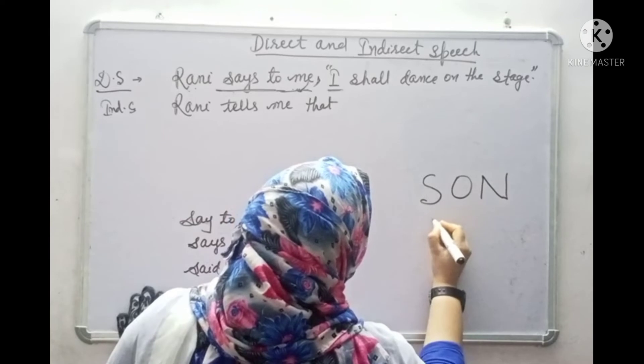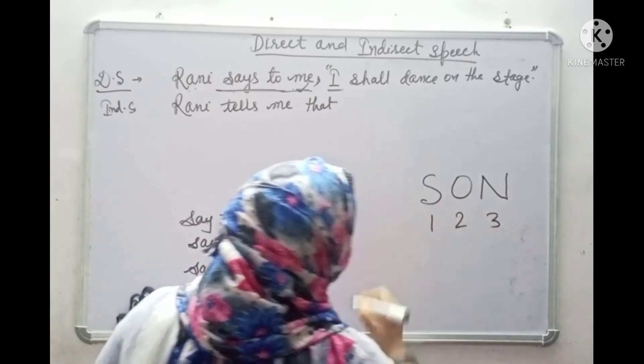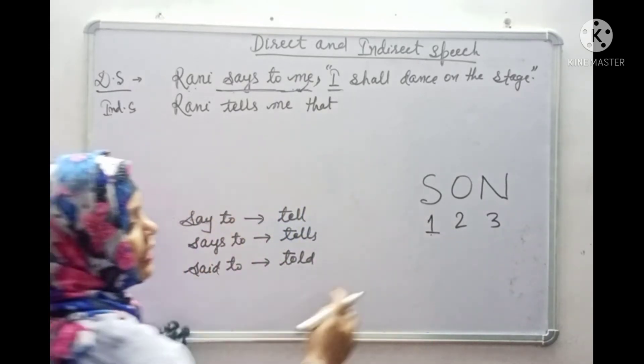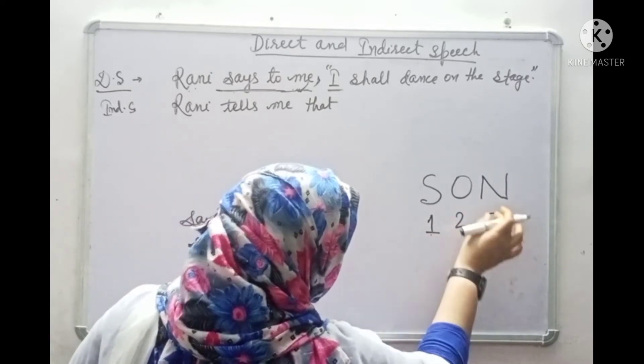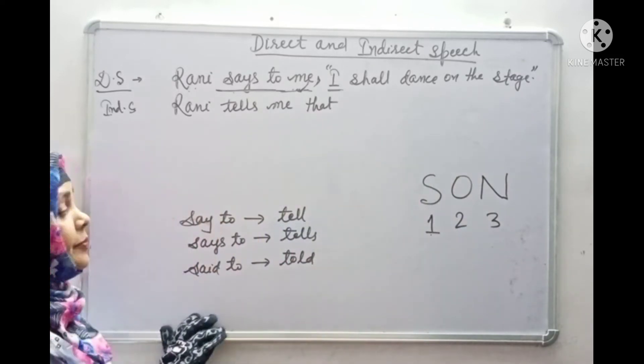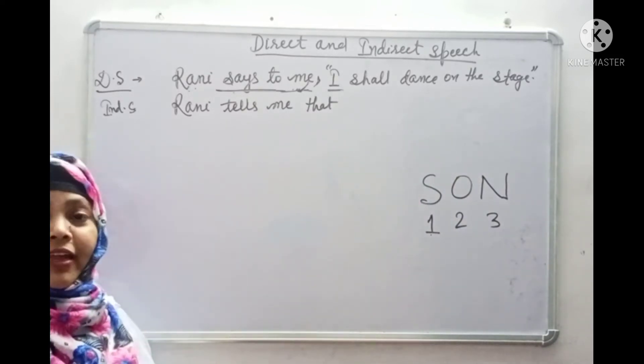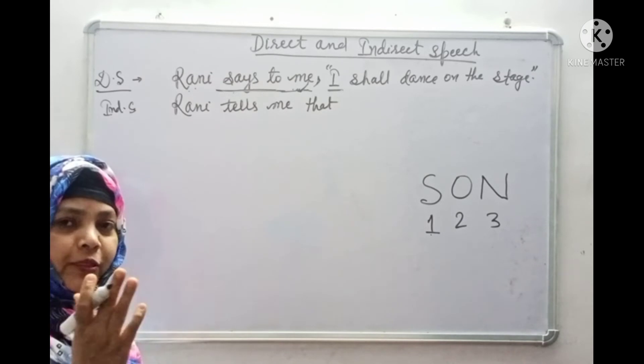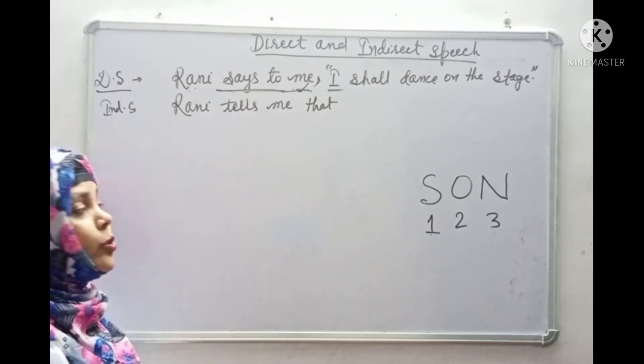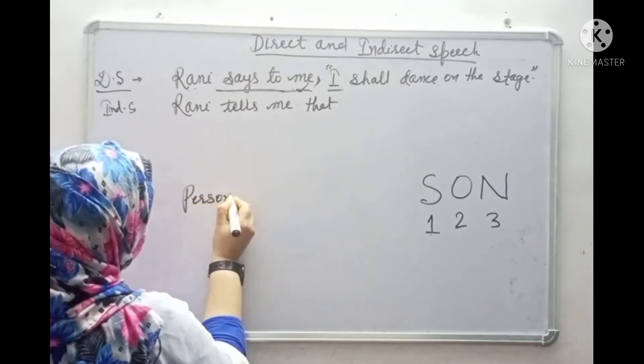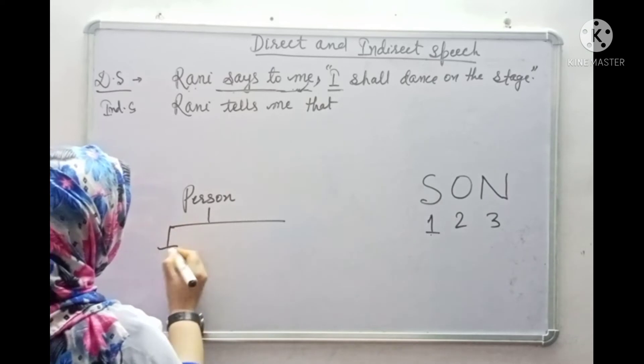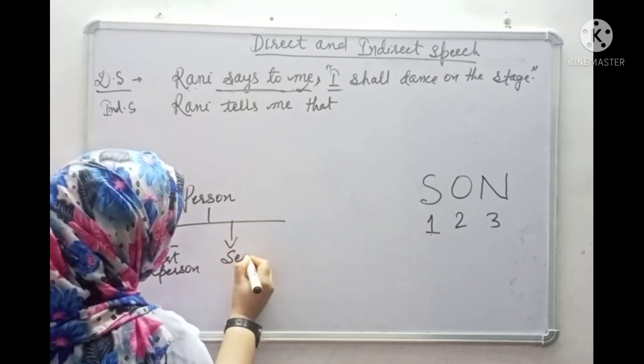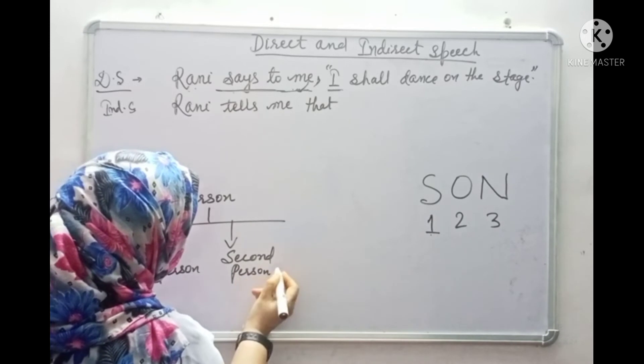S O N. Here one, two, three. Look here. First person, second person, third. One stands for first person, two stands for second person, third is standing for third person.